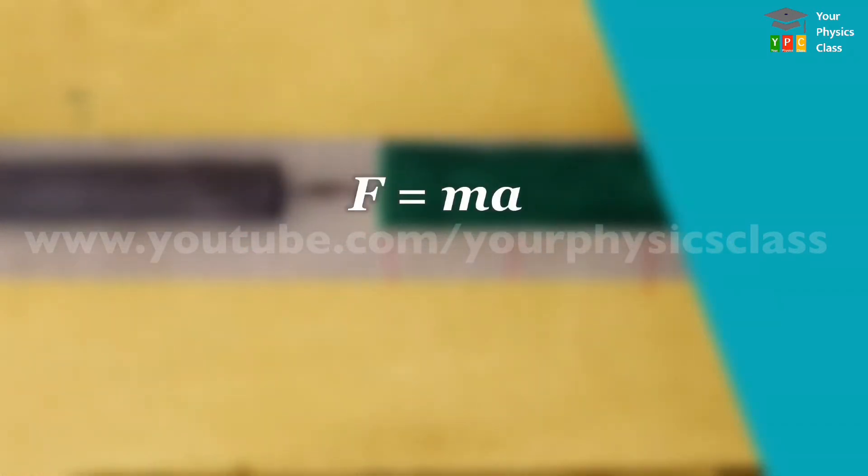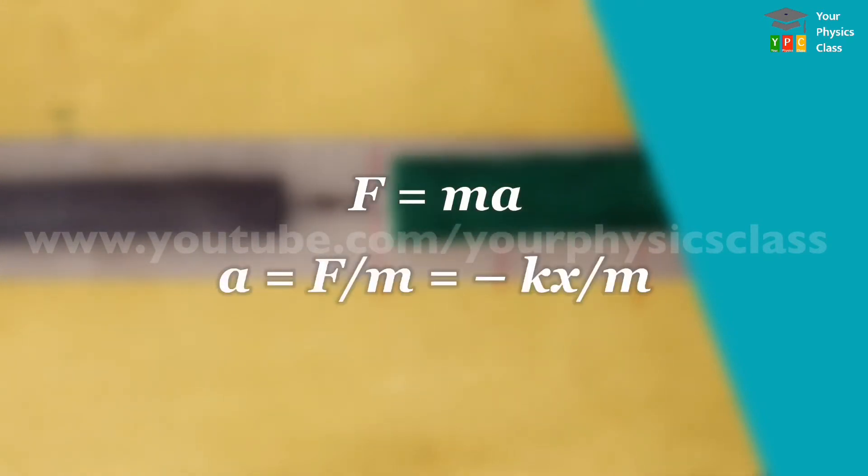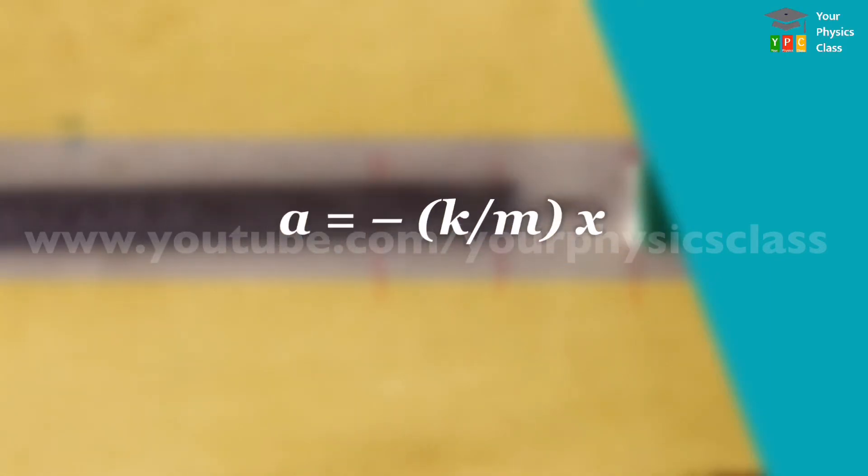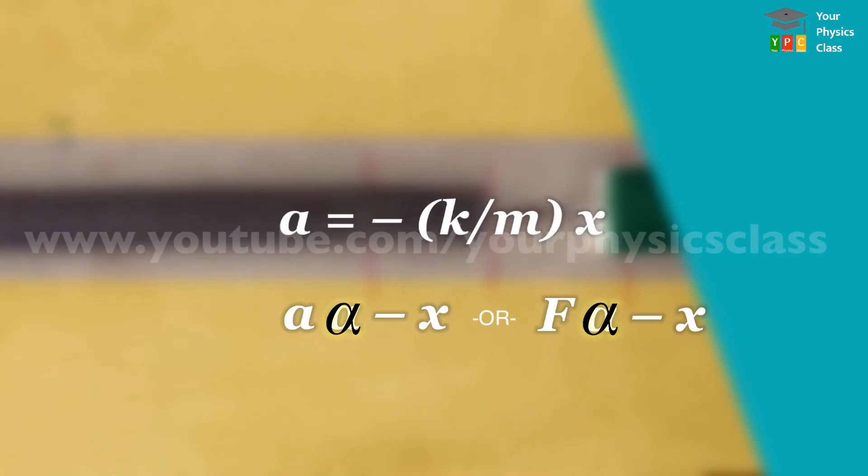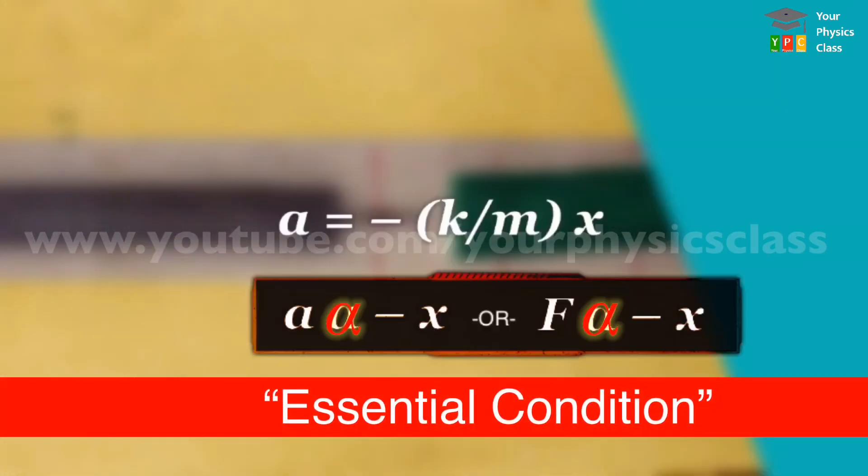As we know, force equals mass times acceleration. So, acceleration of the block is given by a equals F by M. That can be written as minus k by M times x. Therefore, acceleration is directly proportional to negative of displacement, and so is the force. So, this acceleration is a retardation. This is essential condition for linear simple harmonic motion.